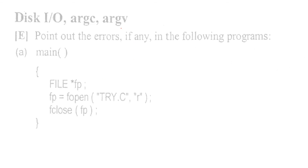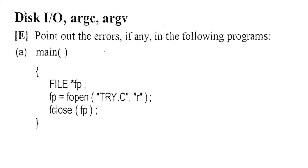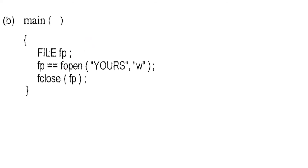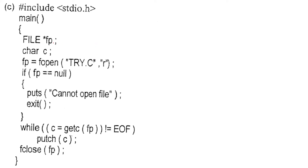Disk IO, ARGC, ARGV — let's point out the errors. I don't find any error here; it is perfectly fine. The file pointer and fopen look correct — the only thing is stdio.h has to be included. In the next one, the double equals sign is the error; it has to be a single equals sign and there has to be some extension. Then in the next code, everything is fine — you only need to use the capital NULL because NULL is a macro and it has been defined as zero, so capital NULL should be used.